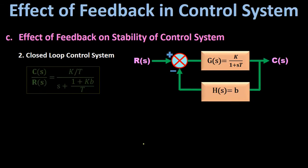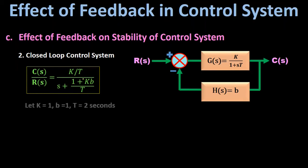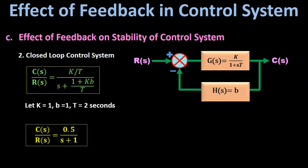For the closed-loop control system, the overall transfer function C(s)/R(s) equals K/T divided by S plus (1 plus K·B)/T. Substituting K equal to 1, B equal to 1, and T equal to 2 seconds gives 0.5 divided by S plus 1. Setting the denominator S plus 1 equal to zero, we get the pole of this transfer function at S equal to minus 1.